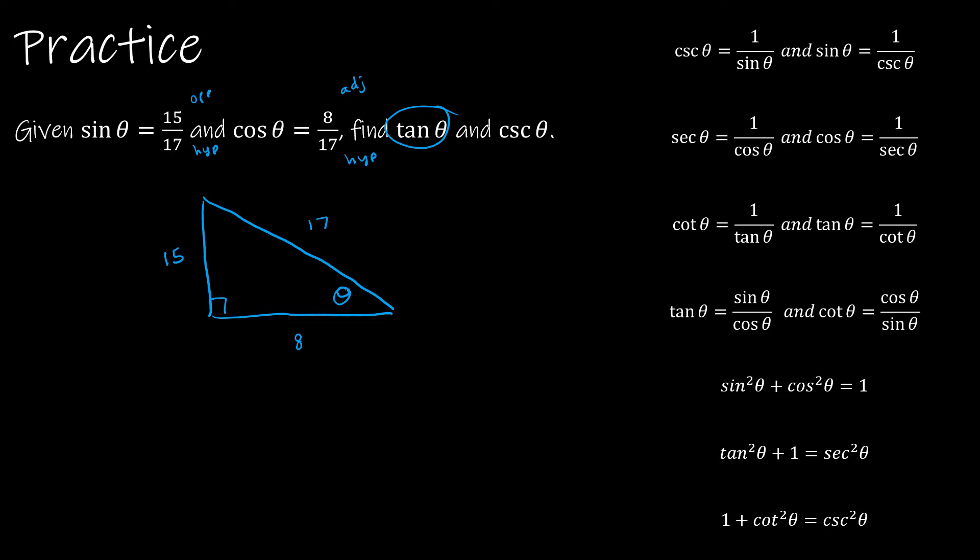Tangent of theta is sine over cosine. So to find tangent of theta, I'm simply going to take 15 over 17 divided by 8 over 17. Those 17s will cancel, which gives me 15 over 8, and that is tangent of theta.